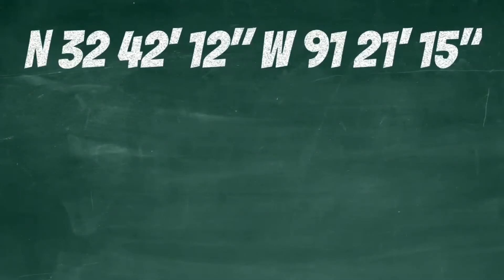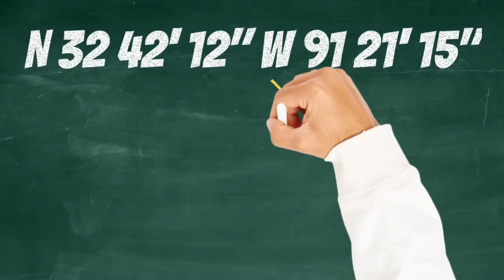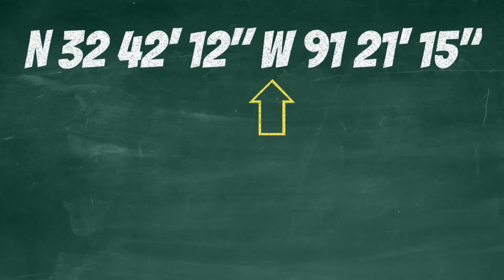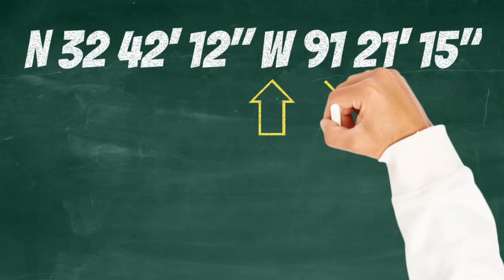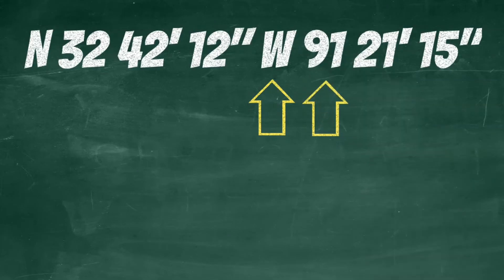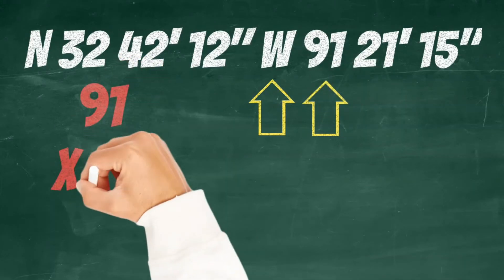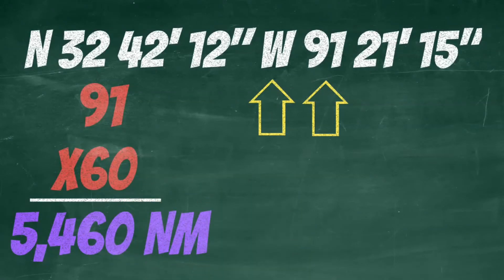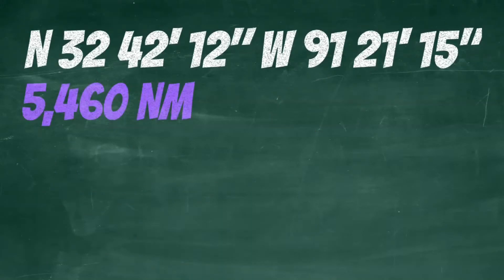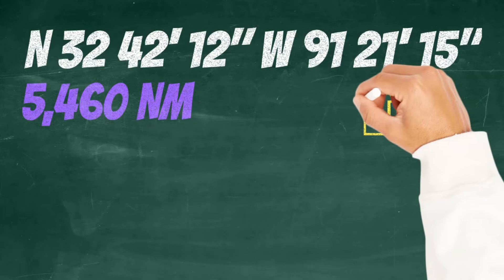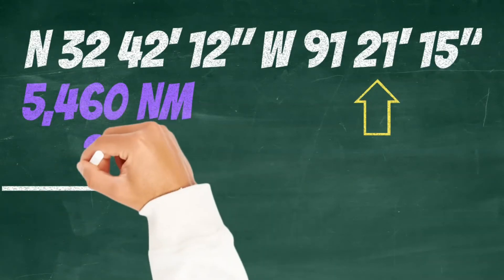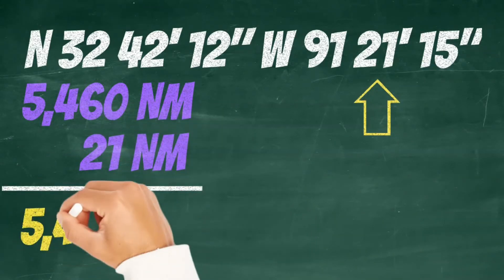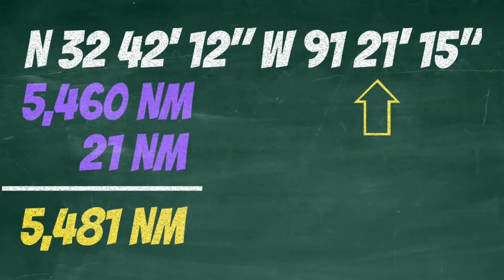Now the longitudes work the same way. Let's calculate this one real quick. First we're in the western hemisphere. Then you can see that we're 91 degrees west of the prime meridian. So if we multiply 91 times 60 you can see that we're 5,460 nautical miles west of the prime meridian. Now let's go ahead and add our minutes here. Remember one minute equals one nautical mile. So let's add 21 nautical miles to get 5,481 nautical miles west of the prime meridian.